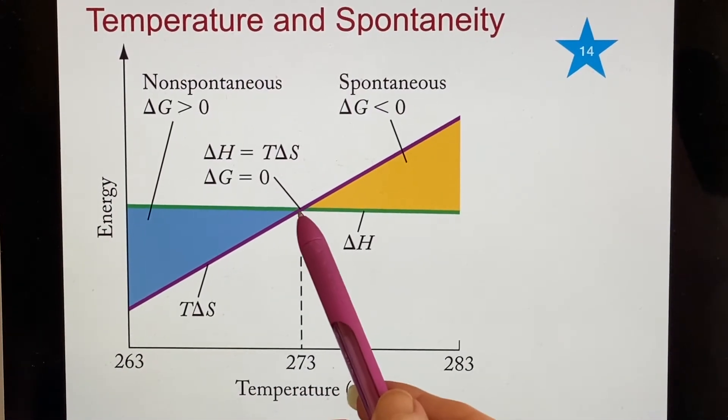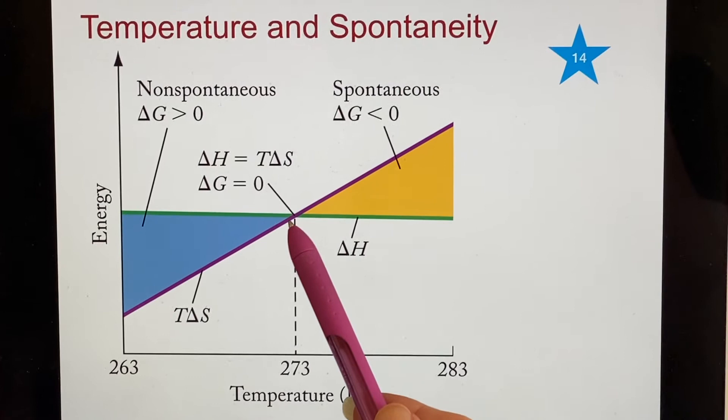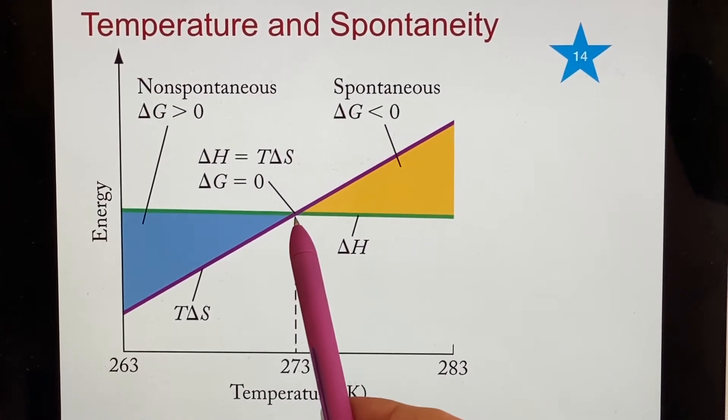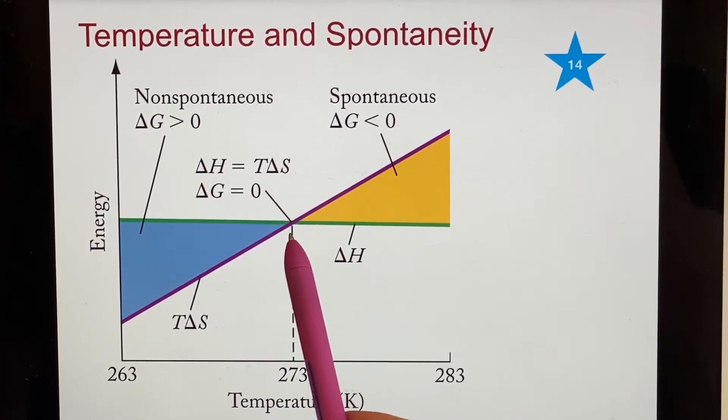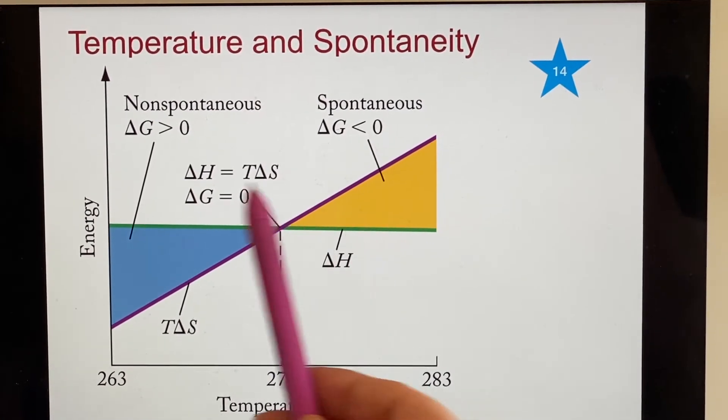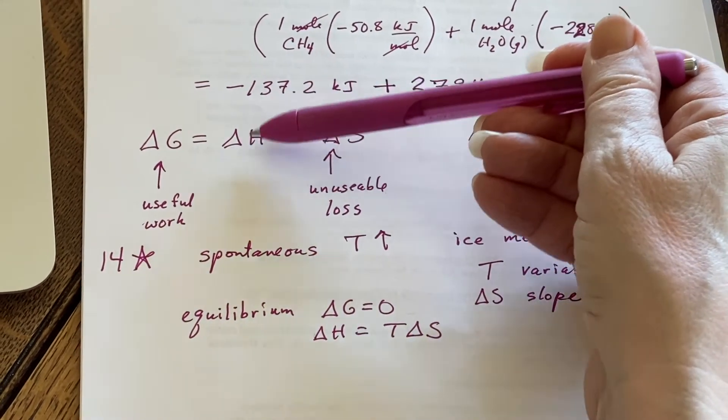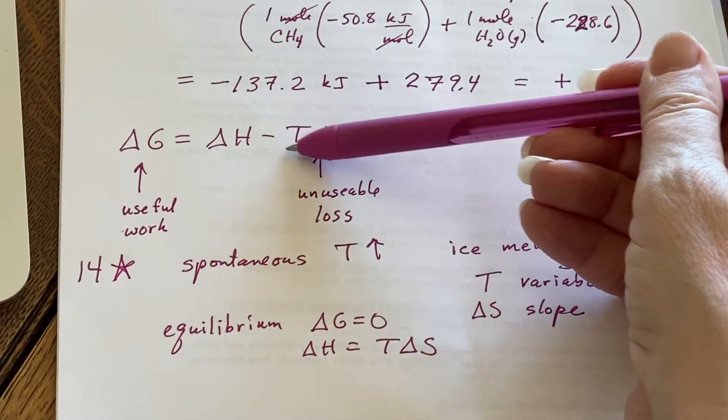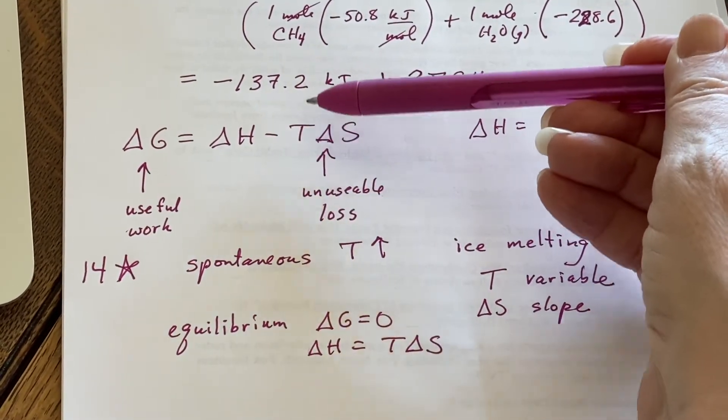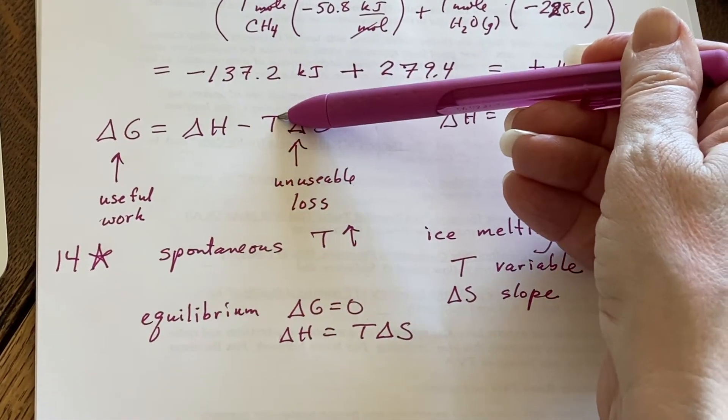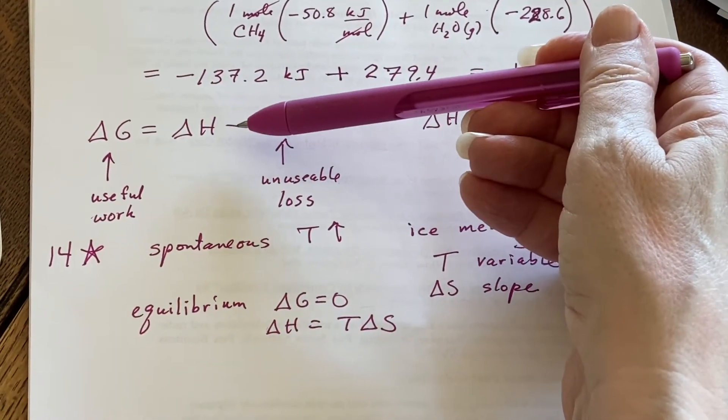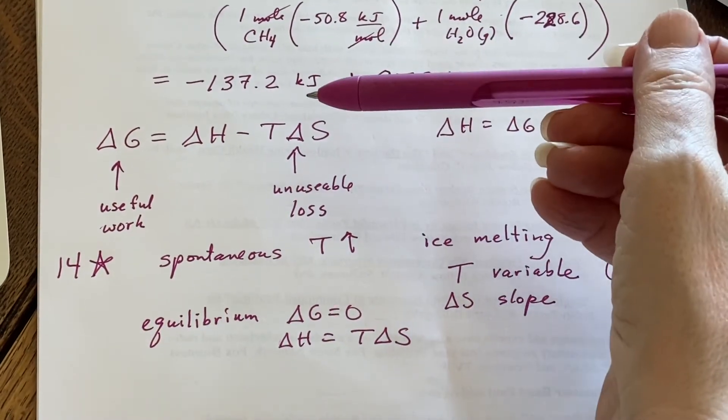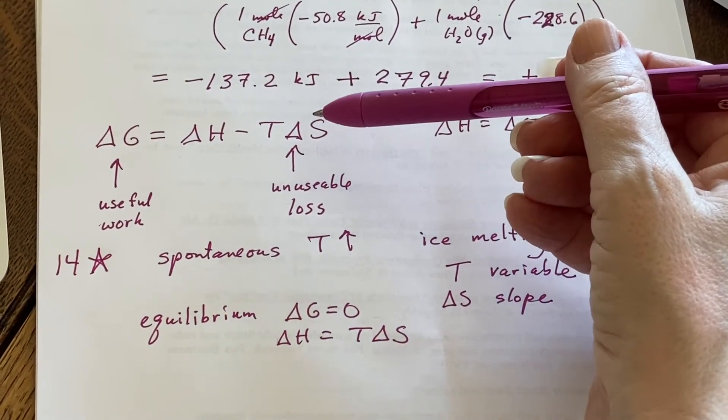We're used to just thinking of this as being the temperature which ice melts. But it's actually a crossover temperature between whether or not the reaction will be spontaneous or not. Well delta H is a set number and T delta S is going to be the part that actually changes because T is the thing that we can control. It's the independent variable. And then there would be certain cases where we could make a reaction spontaneous by changing the temperature.